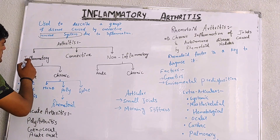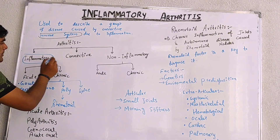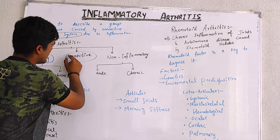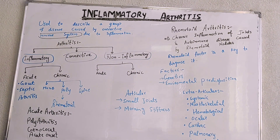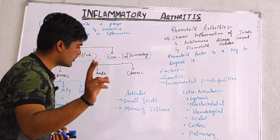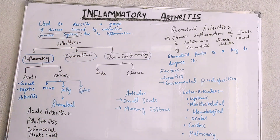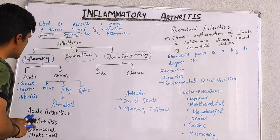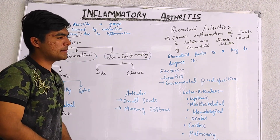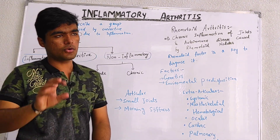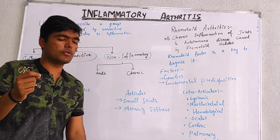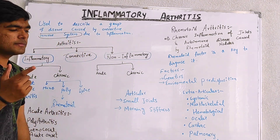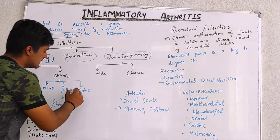Arthritis is basically of three types: Inflammatory, Connective, and Non-Inflammatory. Inflammatory is further divided into two types: Chronic and Acute. Acute is divided into Gout and Septic Arthritis, and Chronic is further divided into three types: Mono, Poly, and Spine Arthritis.